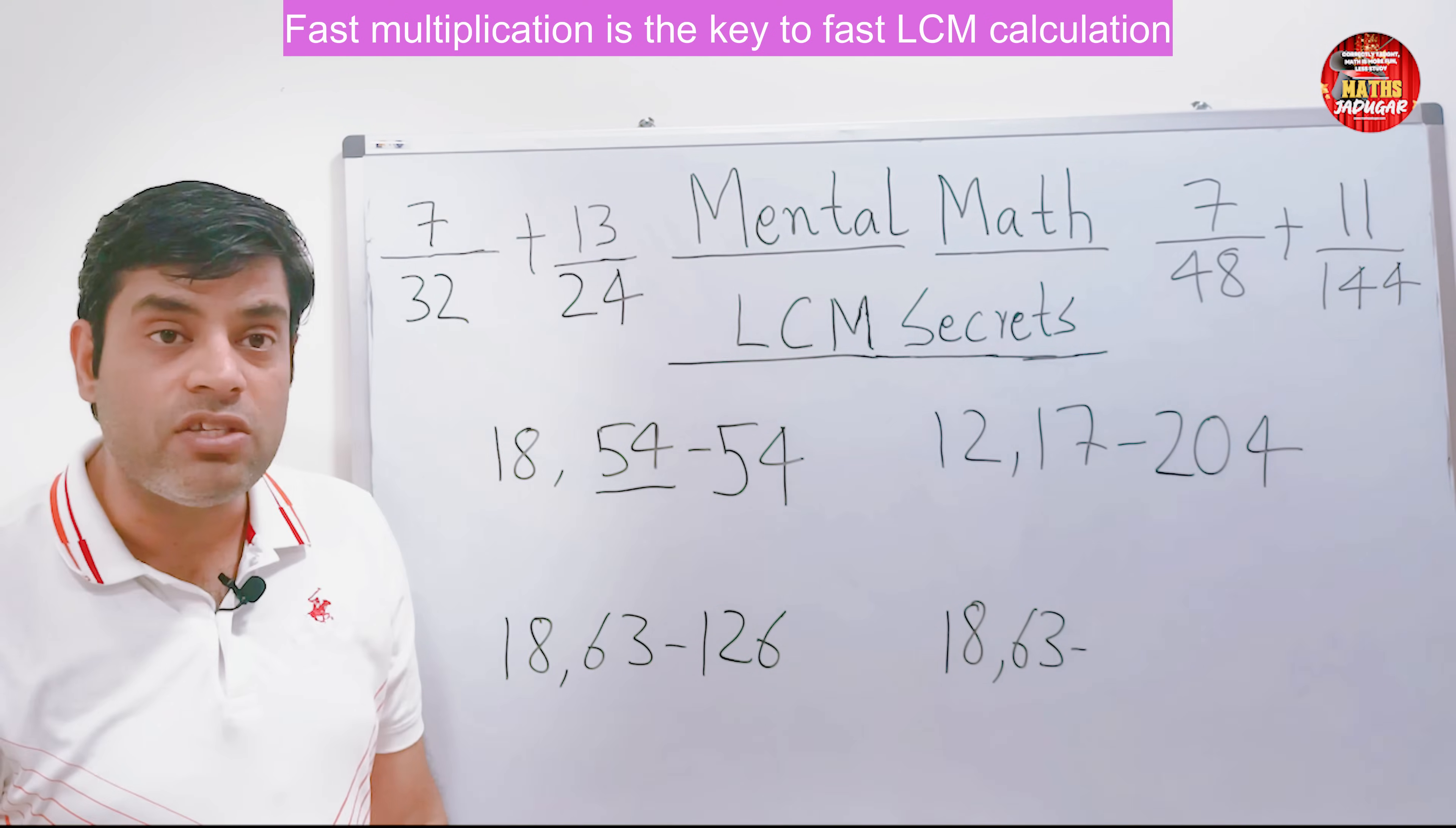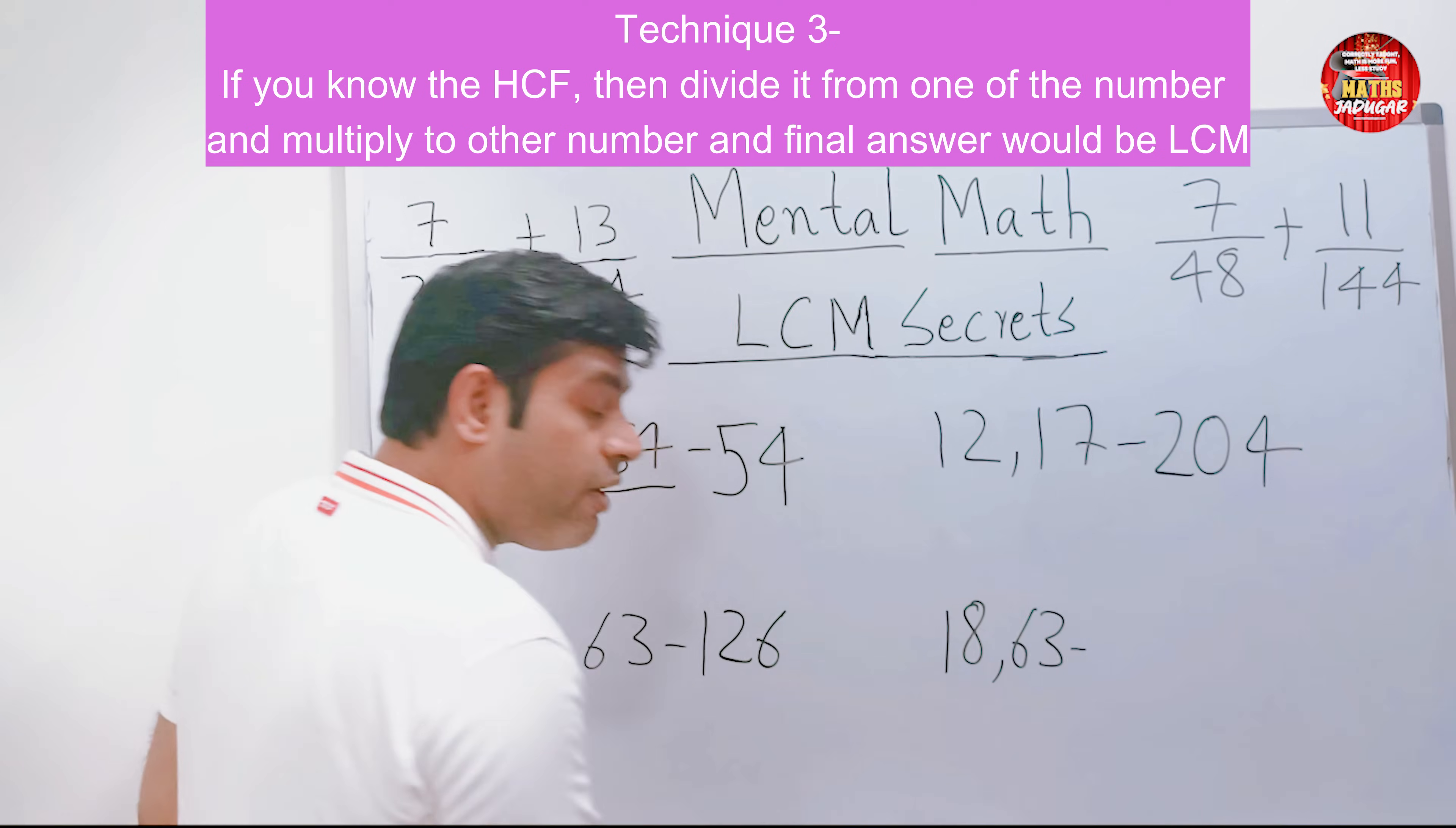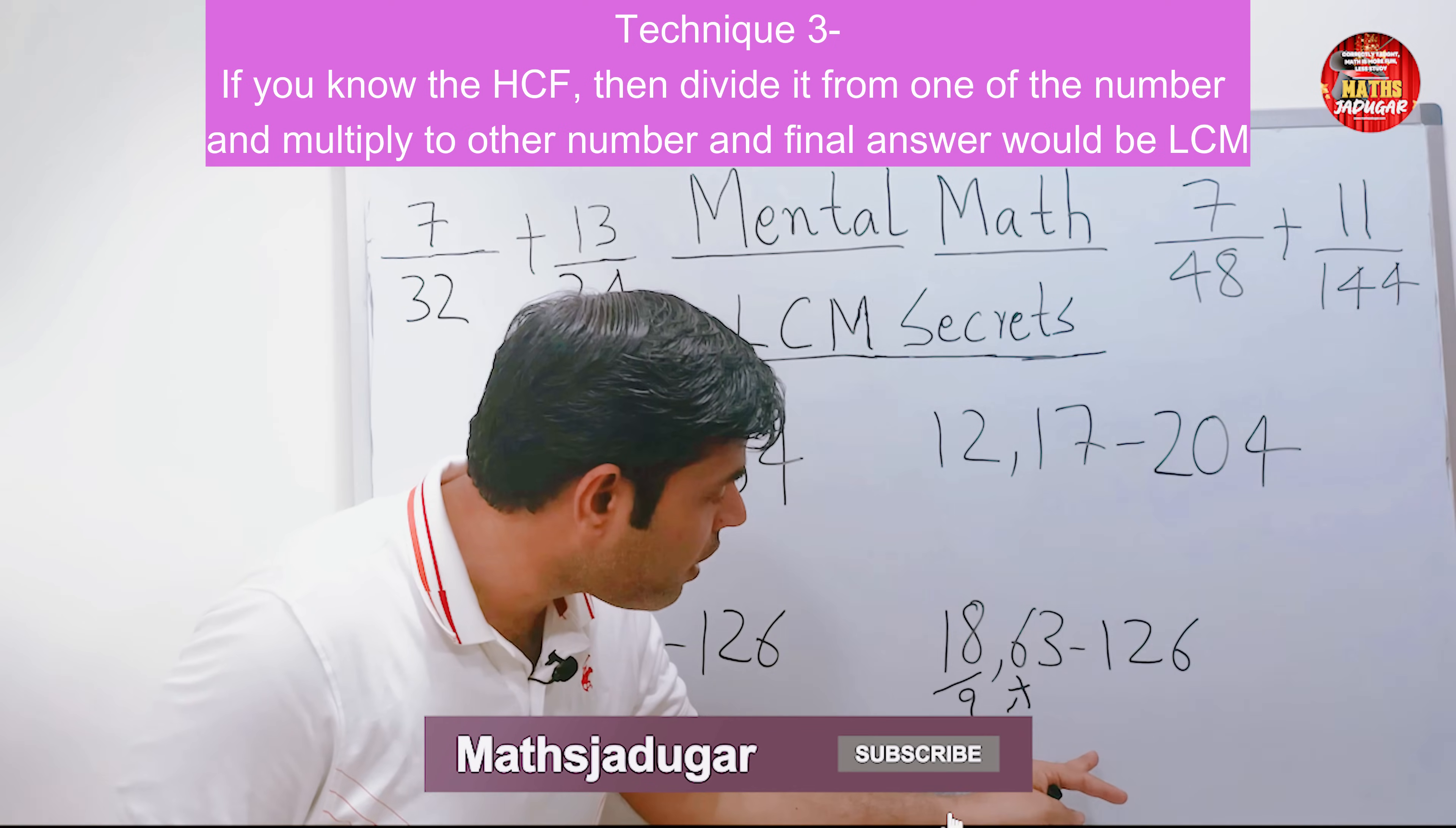Now same question with a different technique. Sometimes it happens you see that HCF just by seeing the numbers. Of course it happens after a lot of practice. If you know that HCF, which is 9 in this case, just divide 9 by any of the numbers. For example, 18 divided by 9 is 2, multiply it with the other number 63, and you will get 126. You could have done the other way also: 63 divided by 9 is 7, and 7 multiplied by 18 would be 126.